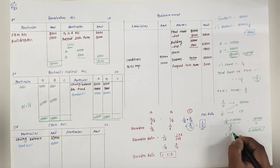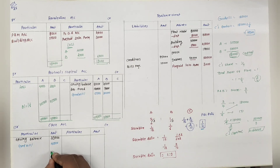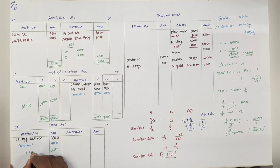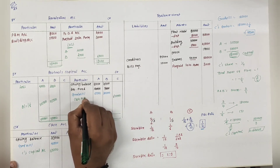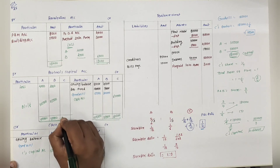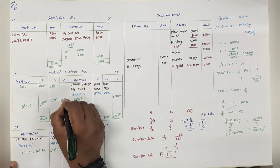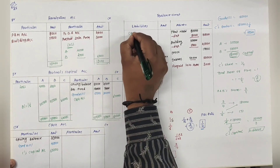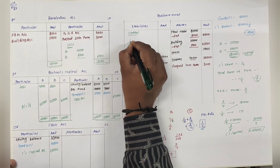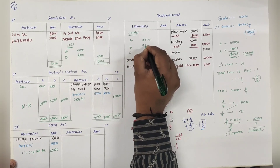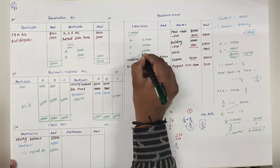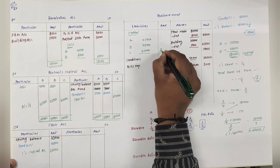60,000 मिला - यह C's capital है. C को 60,000 capital लाना पड़ेगा. Cash debit, C's capital account credit 60,000. Balance carry forward also 60,000. Balance sheet में capital: A 1,05,000, B 75,000, and C 60,000. Total amount is 2,40,000.